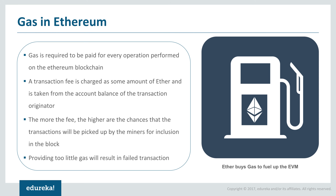Gas is something that you pay for — the transaction fees you're charged are essentially for purchasing gas. Any computation you want to perform requires you to buy gas, and that's where Ether comes in. If you provide a high transaction fee, the chance of your operation completing faster is high, because miners take this as profit. But if you provide too little gas, the transaction itself may fail. It's completely up to you to decide on the gas used for your computational process.